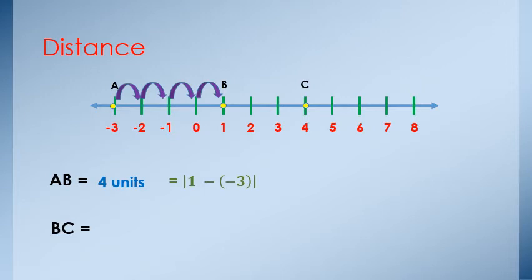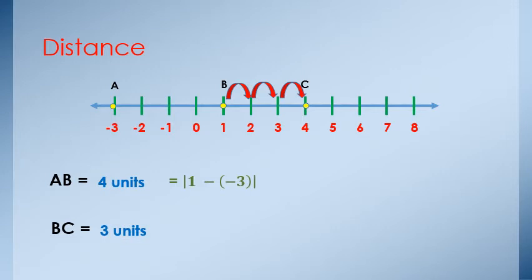To find the distance BC, the simple method is to count from B to C: 1, 2, 3 units. And if we use the rule — absolute value of the difference — absolute of 4 minus 1, or absolute of 1 minus 4, equals 3 units.